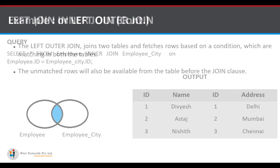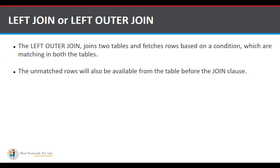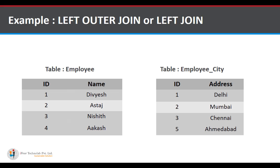The next is left outer join. A left outer join joins two tables and fetches rows based on conditions which are matching in both tables. The unmatched rows will also be available from the table before the join clause — using the same employee and employee_city tables as before.